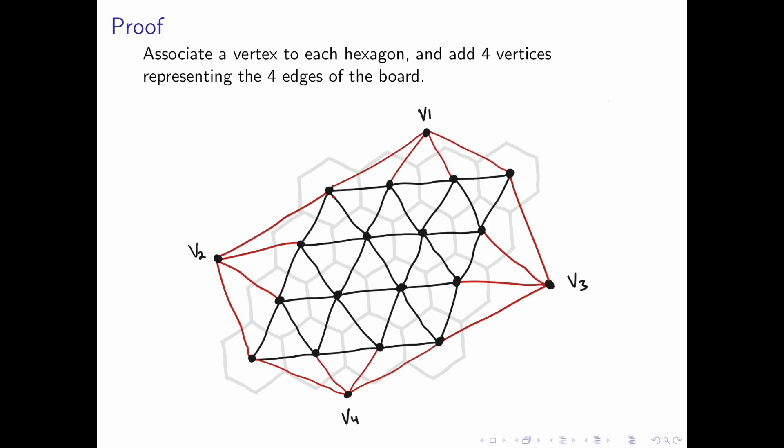For each hexagon, we will associate a vertex to it. We will connect the vertices if their corresponding hexagons are beside each other.